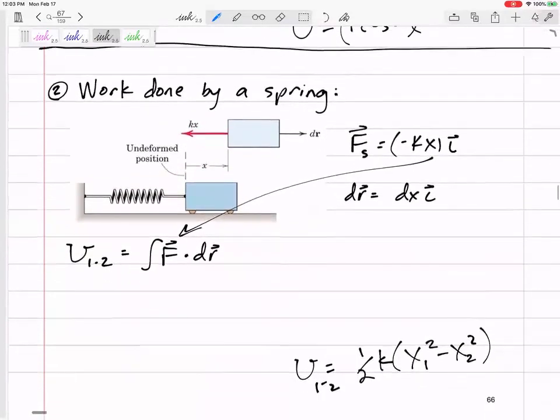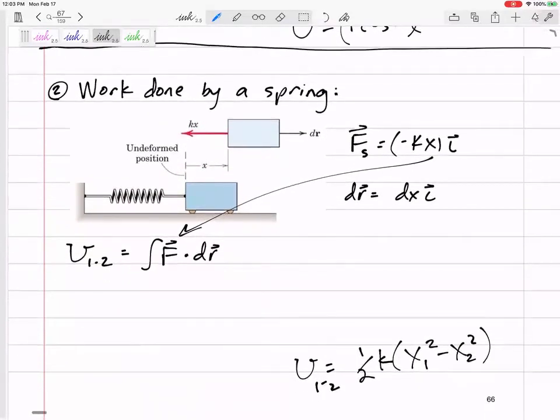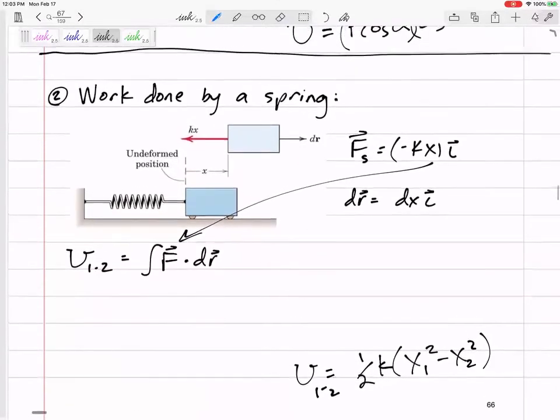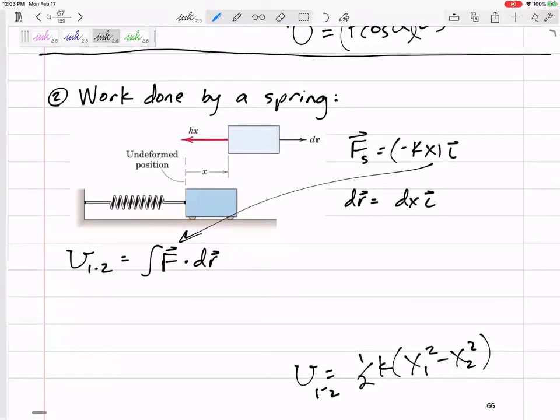And so with this one, you can look at the derivation of why the integral of F dotted with dr comes out to one-half k(x₁² - x₂²). So that's the work done by a spring.